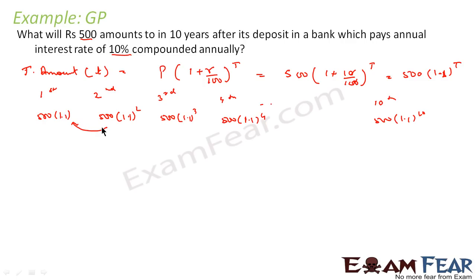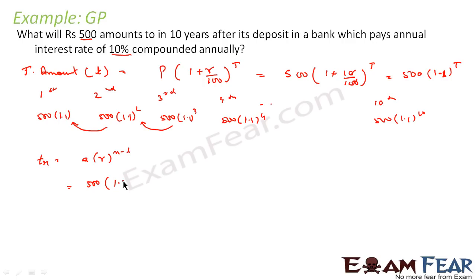This is a GP — if you divide the 2nd year value by the 1st year value you get 1.1, and similarly dividing the 3rd year by the 2nd also gives 1.1. We know T_n = a·r^(n−1). Here a = 500×1.1 and r = 1.1, or equivalently a = 500, r = 1.1, n = 10.